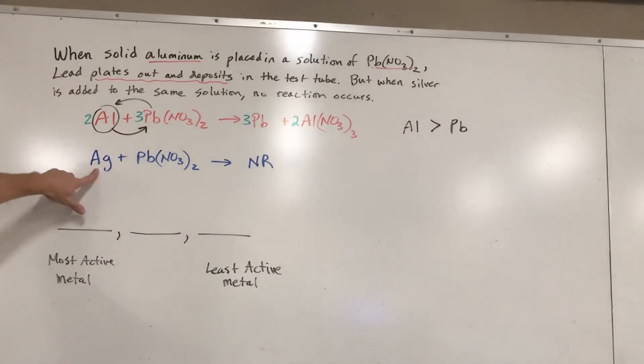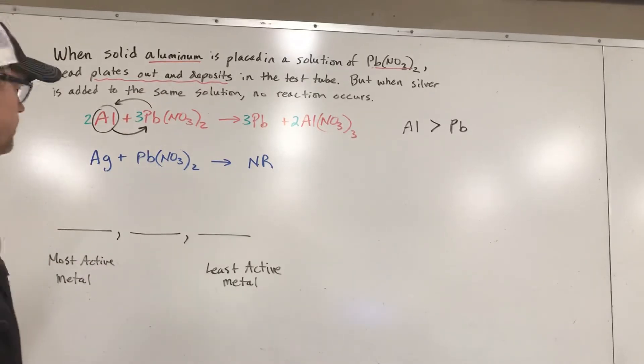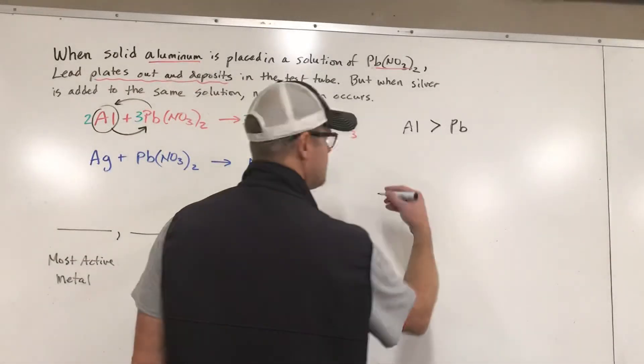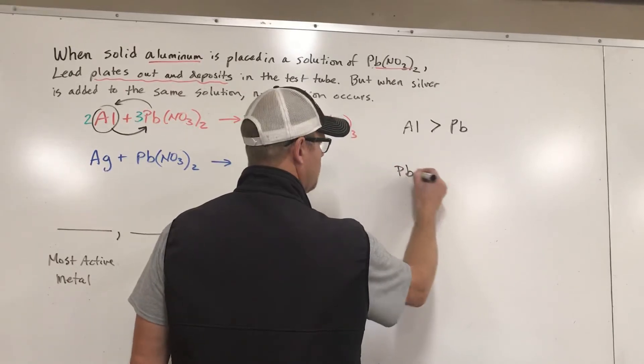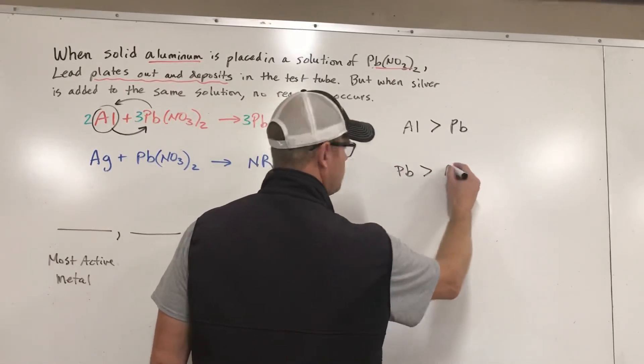Now over here, we see silver try the same thing. Silver tries to go in and kick the lead out, but it can't. No reaction happens, which means lead is strong enough to just stay put. Lead is basically able to say, nope, I'm staying right where I'm at. I'm not going to get kicked out of this solution. So silver is not strong enough to go in and boot the lead out. So what that tells us is silver is weaker. It's less reactive. So it means lead is more reactive than silver.